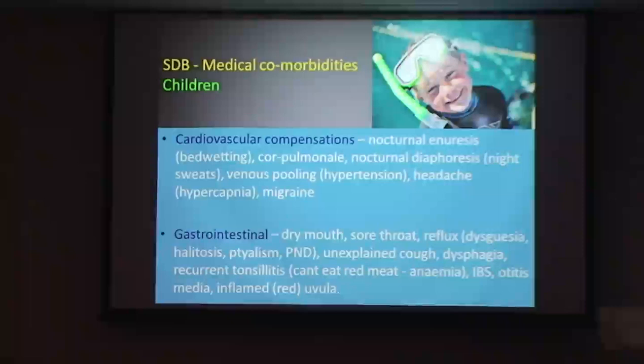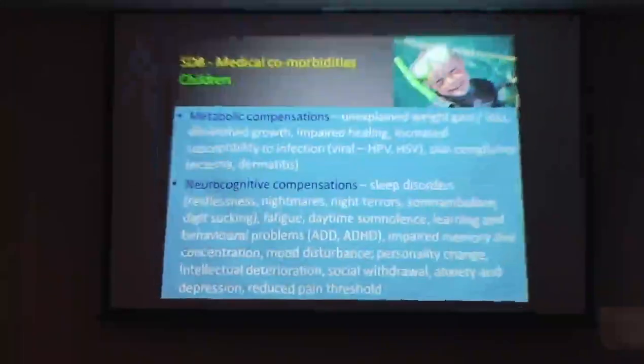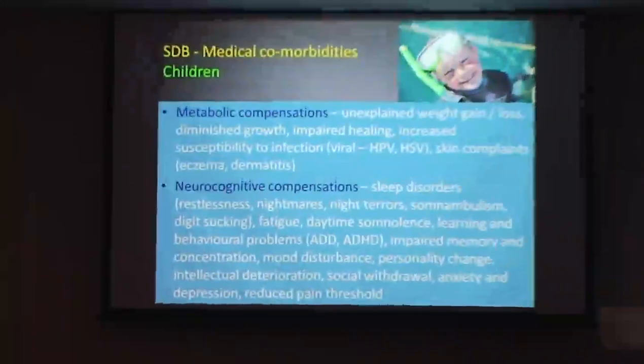Recurrent tonsillitis is another thing to look at. An unexplained cough. A kid that's in the chair and just doesn't want you in there — that's acid. He's off to a paediatric ear, nose and throat. Look to see if you can see an inflamed uvula. Red uvula in kids.